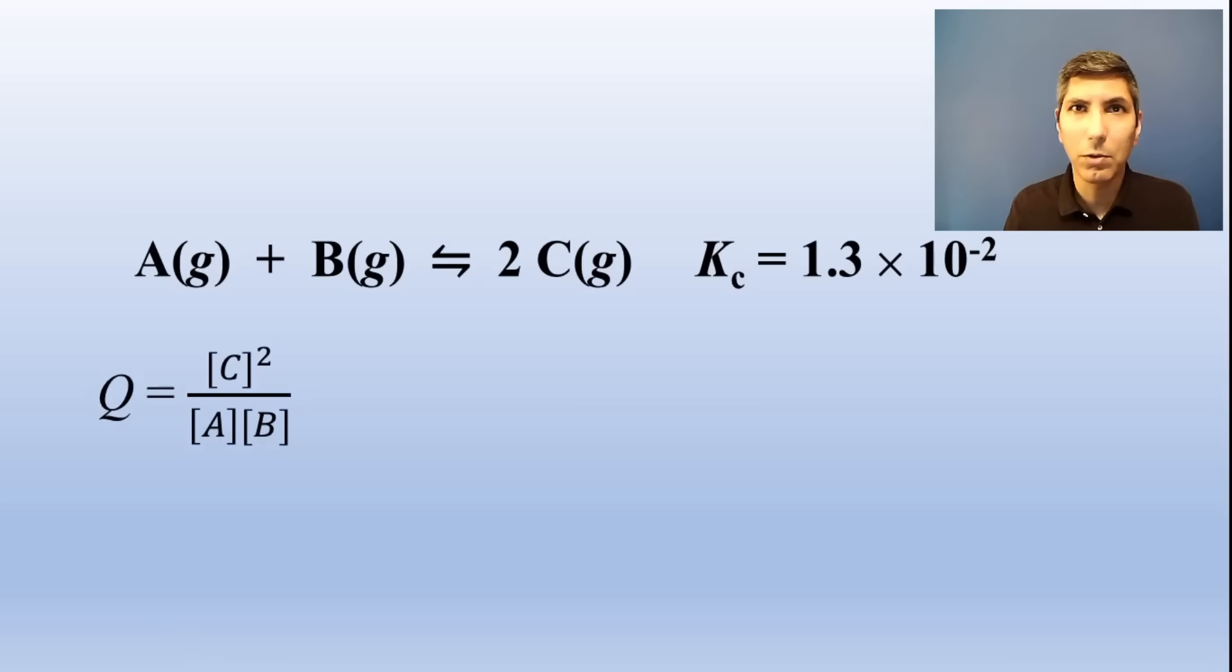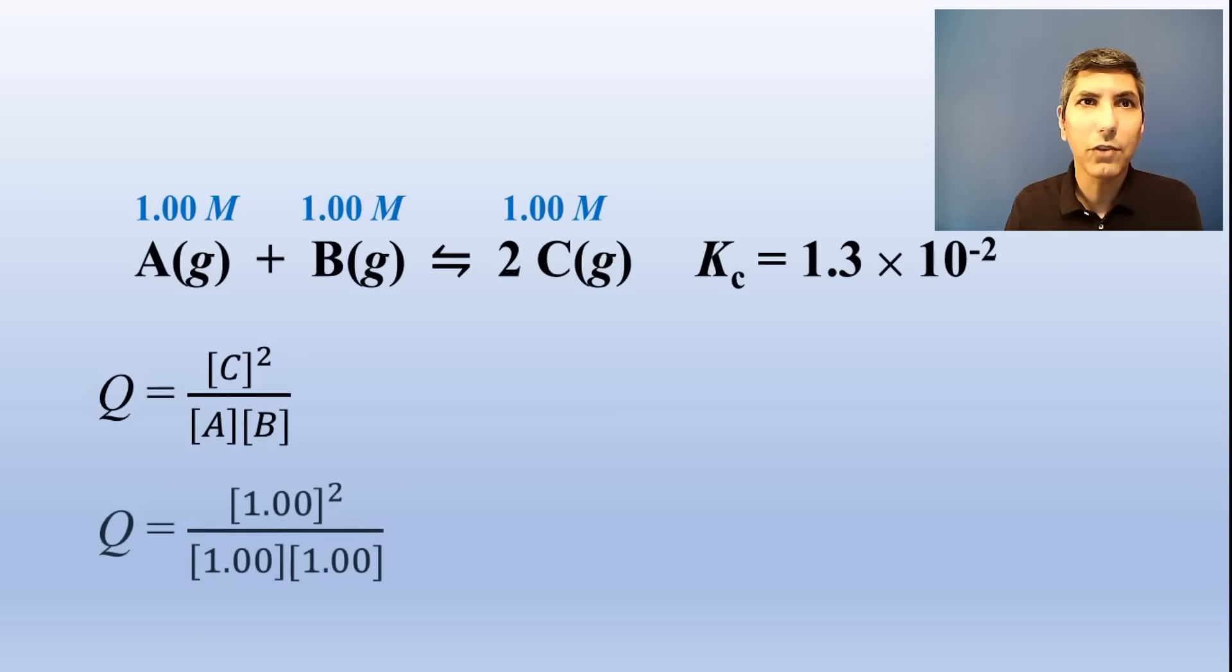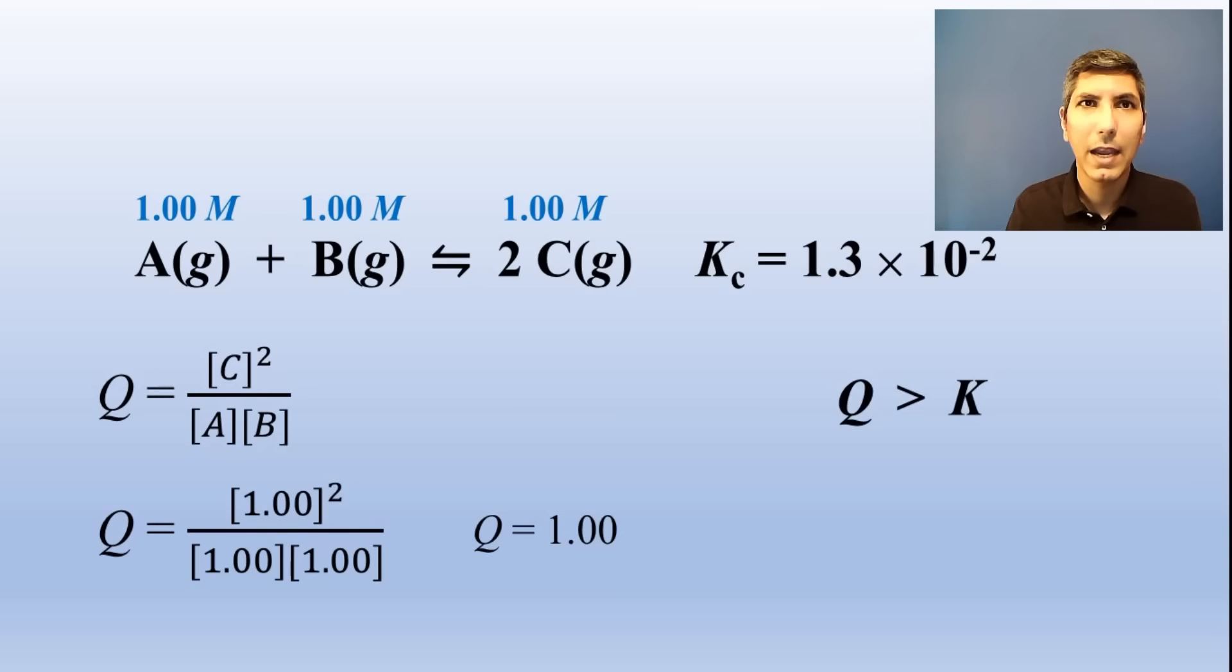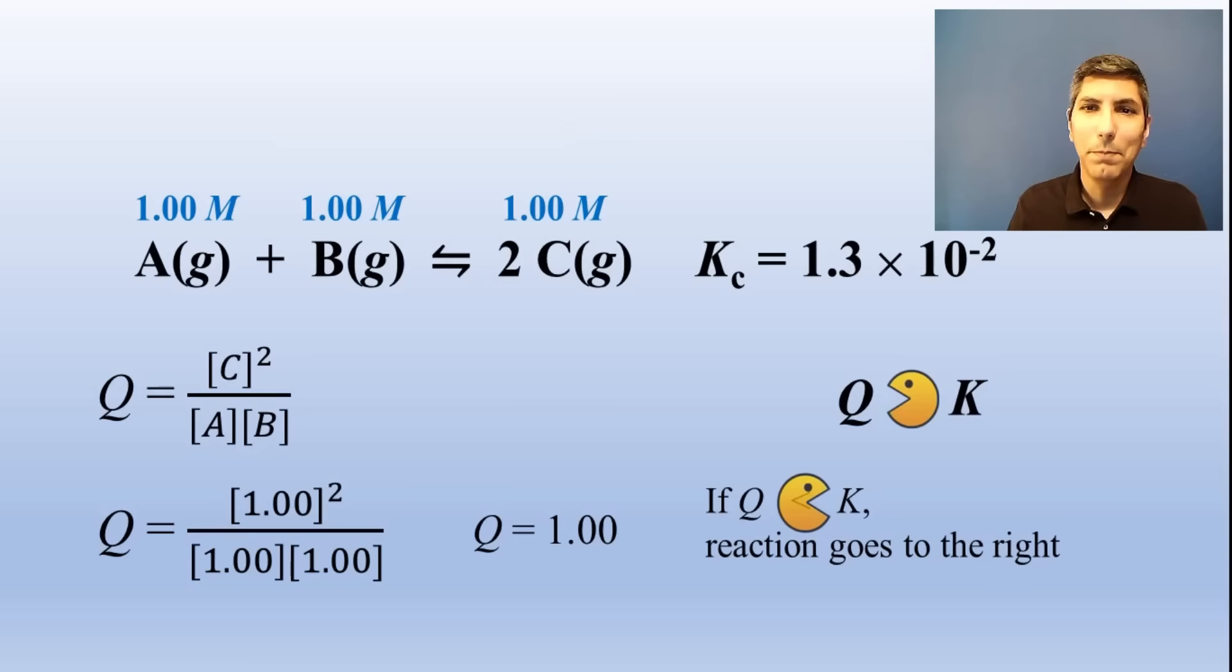If you have a system that's not at equilibrium, you can plug those pressures or concentrations into the reaction quotient, which we call Q, and determine in which direction the reaction will proceed to attain equilibrium. If Q is greater than K, the reaction proceeds to the left, and it will make more reactants at the expense of the products. If Q is less than K, the reaction will proceed to the right and produce more products. If you have trouble keeping that straight, just take the symbol and turn it into a little Pac-Man character, and you can see which direction it's going.